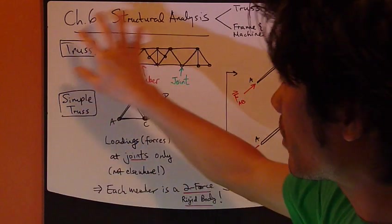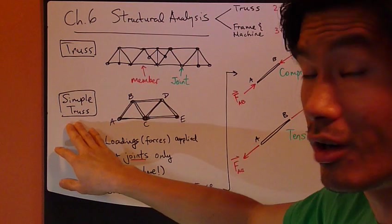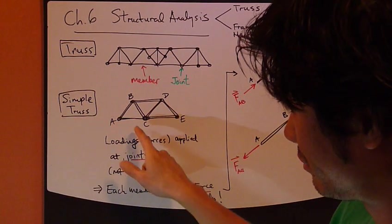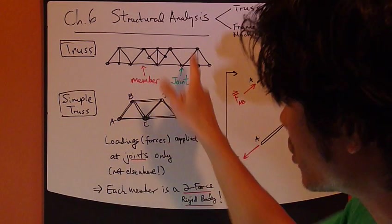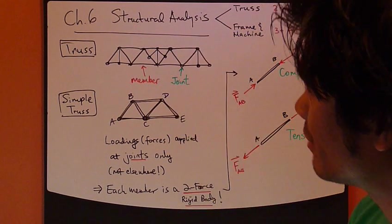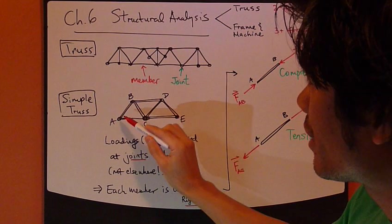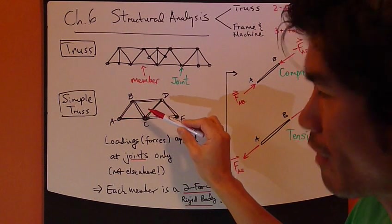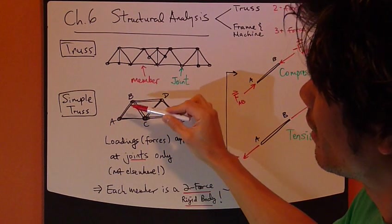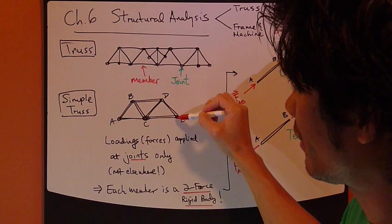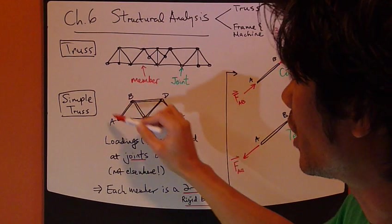Now, a subcategory of truss is called a simple truss. It's simple because, compared this picture to this picture, this is simpler. Here, for a simple truss, all the forces or loading are applied at joint only, and it could look something like this.